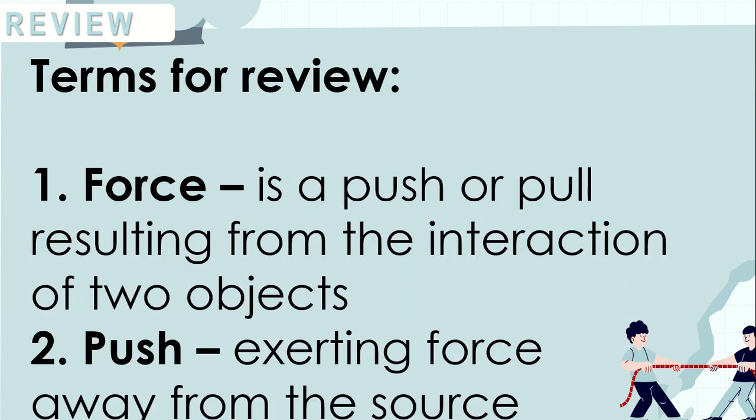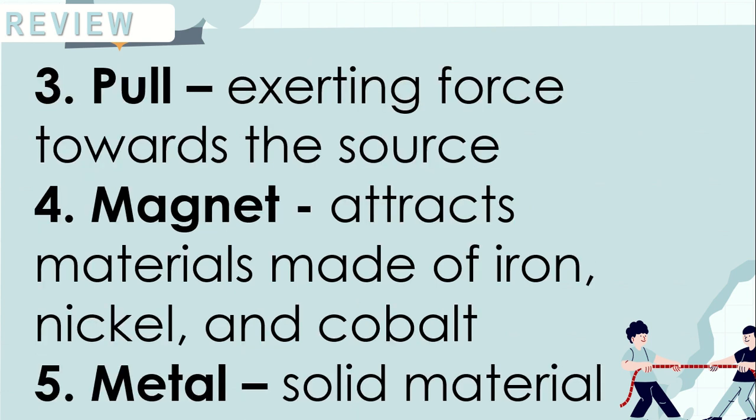Here are the terms for review. We have force: it is a push or pull resulting from the interaction of two objects. Push: exerting force away from the source. Third is pull: exerting force towards the source. Next is magnet: attracts materials made of iron, nickel, and cobalt. Next, metal: it is a solid material.